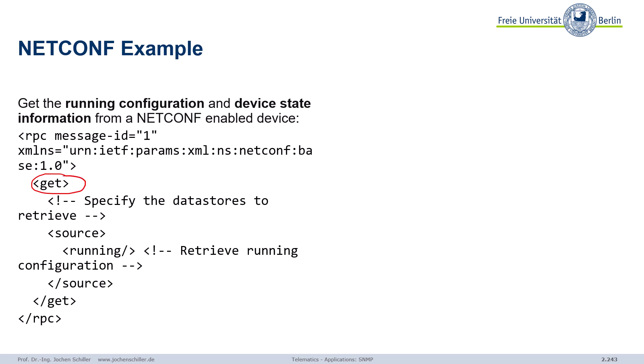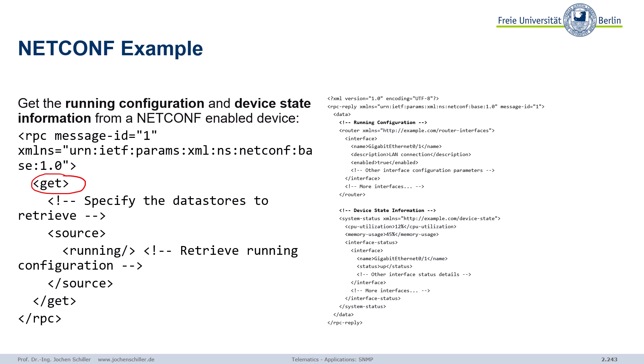The RPC contains our get command, and you also have to specify which data store to get. You can ask for the running configuration — that's the idea. You will then get an answer, and the answer is also XML, because today we know how to handle XML. The first part gives you the running configuration — the current operational configuration of the device. It includes settings like interface configuration, routing protocols, access control lists, and other parameters such as who's allowed to access the device.